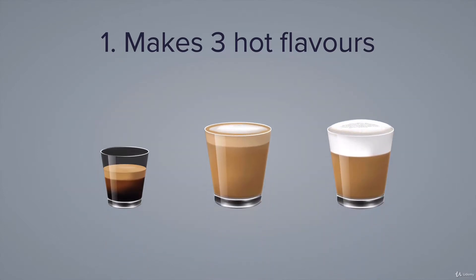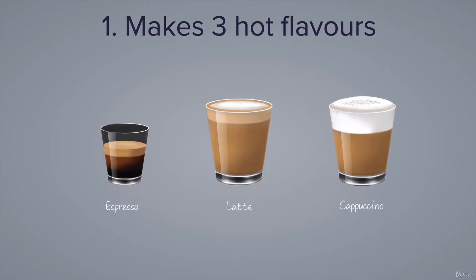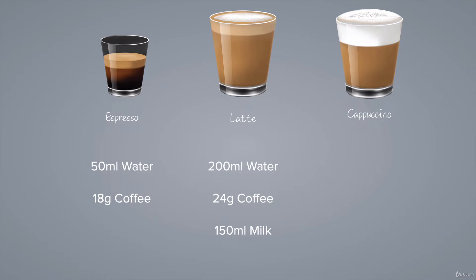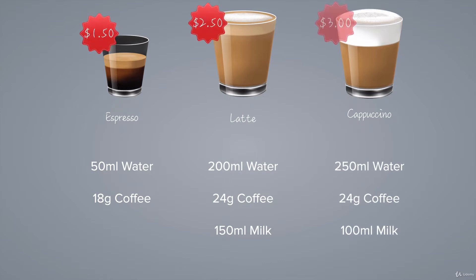We're going to create our own coffee machine. The first step is to replicate the ability to make three hot flavors. The flavors we're going to make are: one, espresso; two, latte; and three, cappuccino. Here are the recipes for these three drinks — each requires a different quantity of water, coffee, and milk, and they each have a different price.